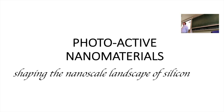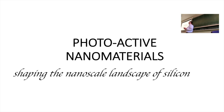Today we will discuss the most abundant photoactive nanomaterial present on earth: silicon. Do you know how silicon looks? This is a silicon wafer. This silver metallic-looking material is actually a single crystal cut from a so-called ingot. That is how they make silicon for the semiconductor industry.